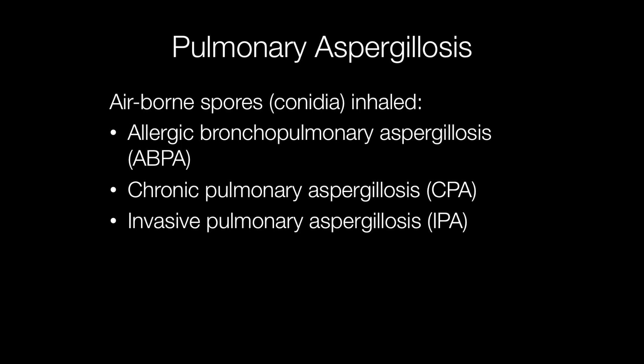Aspergillus gains entry to the body through inhalation of spores, also known as conidia. The problems that Aspergillus can cause include allergic bronchopulmonary aspergillosis (ABPA), chronic pulmonary aspergillosis (CPA), and invasive pulmonary aspergillosis (IPA), which is the most severe type of disease caused by Aspergillus.